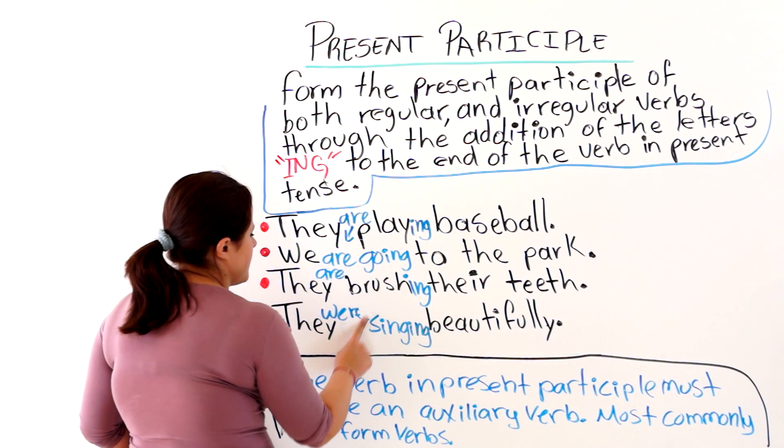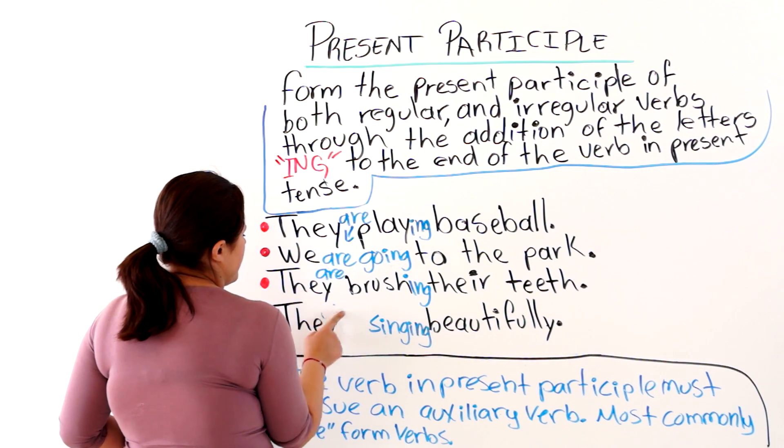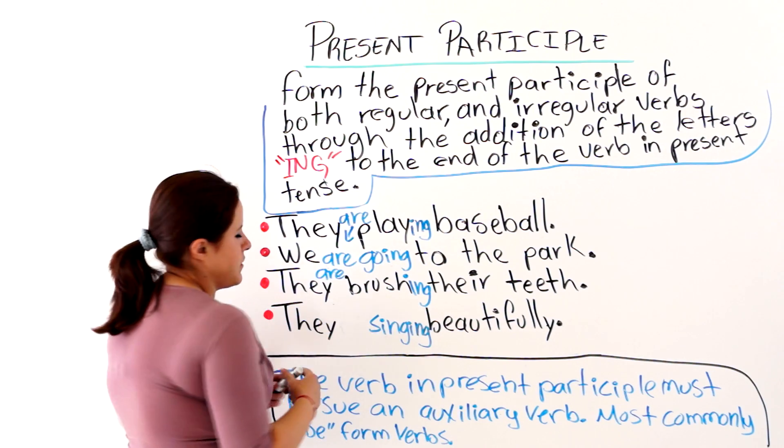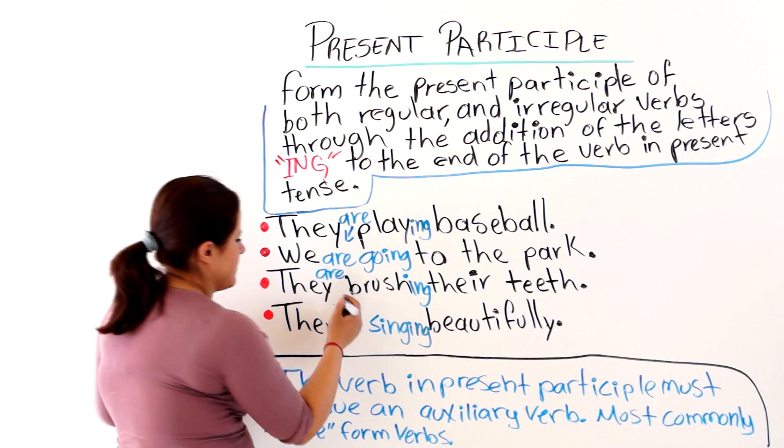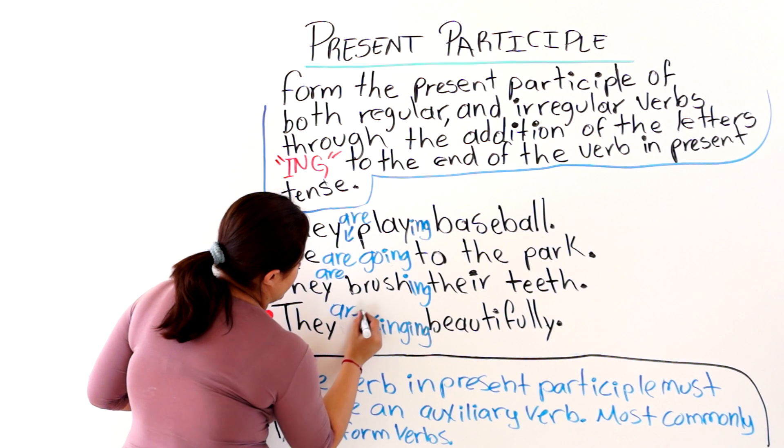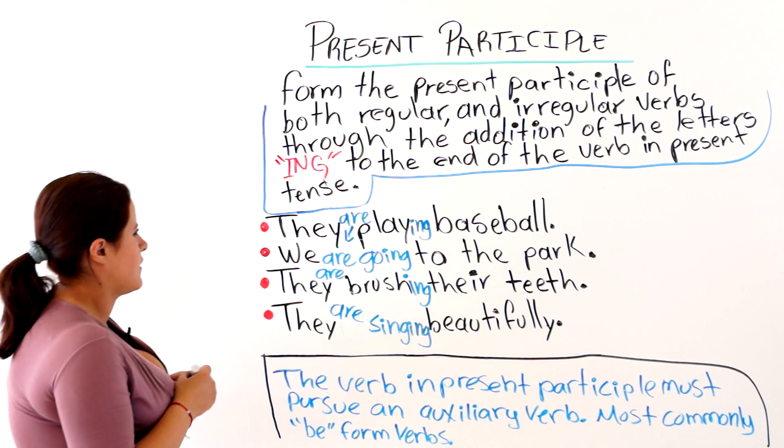Since we are using the present participle, that is why I have not given you examples with were. That is right. We need are. They are singing beautifully.